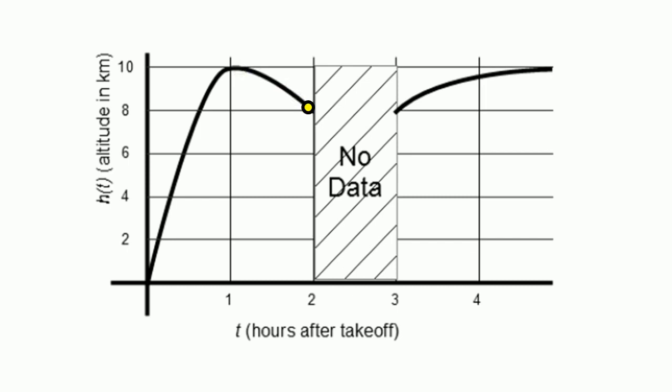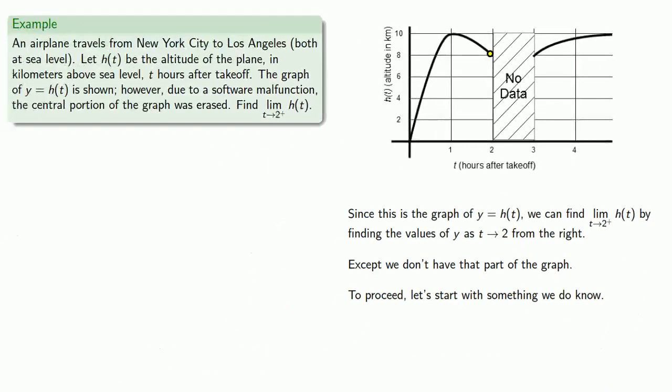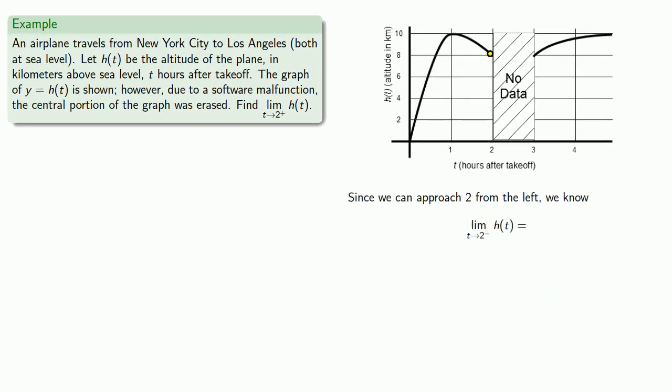And so this suggests that we know the limit as T approaches 2 from the left of H of T. Since we can approach 2 from the left, we know the limit as T gets close to 2 from the left of H of T is going to be 8.